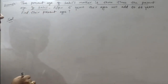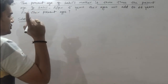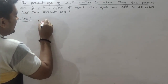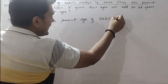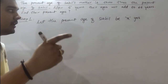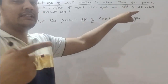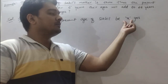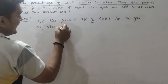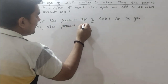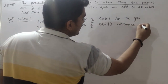The first step is to always assume the present age of the person to whom the age is being compared. Since Sahil's mother's age is compared to Sahil, we assume the present age of Sahil is X. So let the present age of Sahil be X years. Then the present age of Sahil's mother becomes 3X.